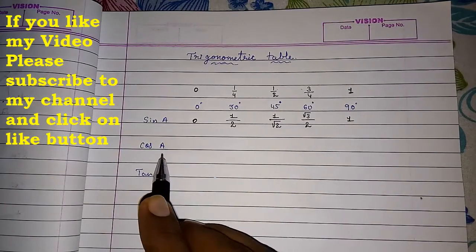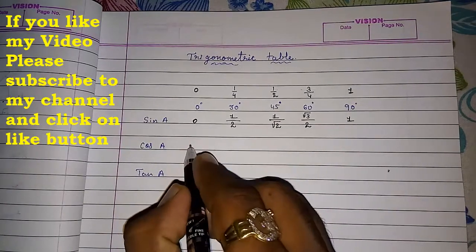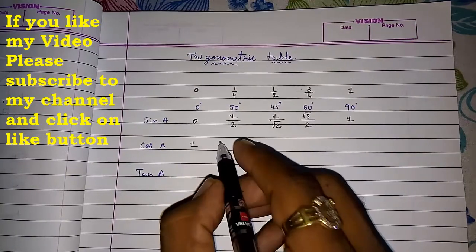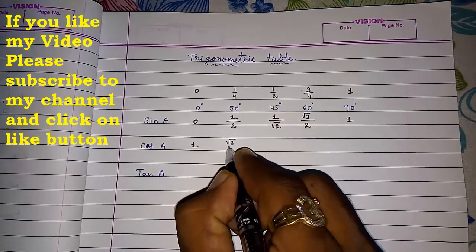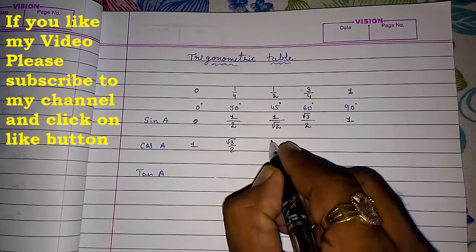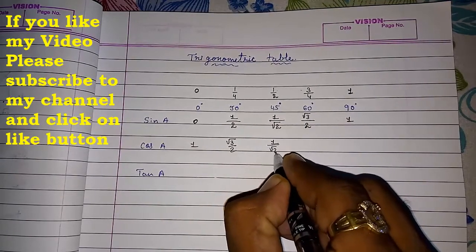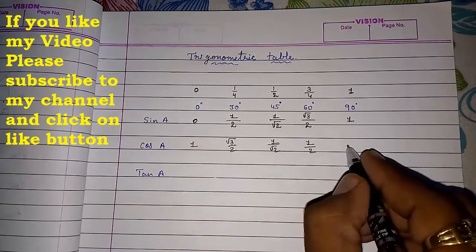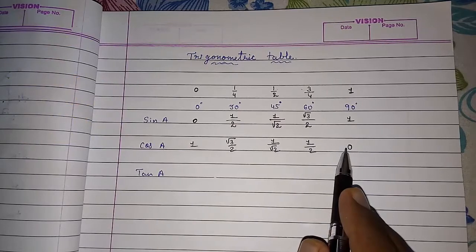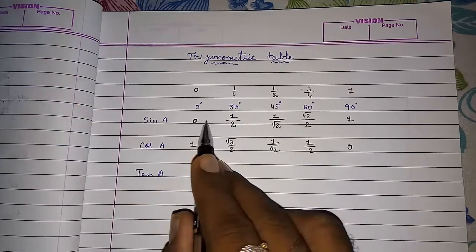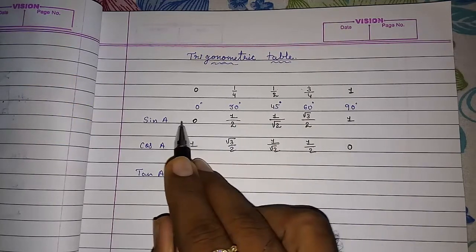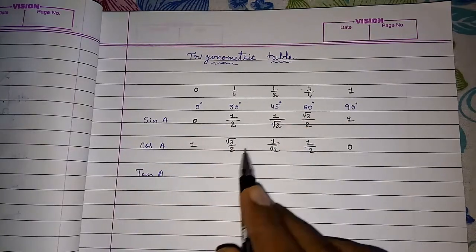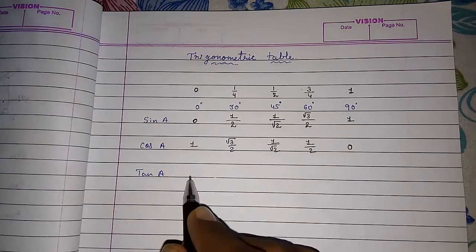Now to find cosine values, we simply reverse the order of the sine values. So cosine goes: 1, √3/2, 1/√2, 1/2, 0 for angles 0°, 30°, 45°, 60°, 90° respectively. We only need to find sine values using this method and then reverse the order to get cosine.